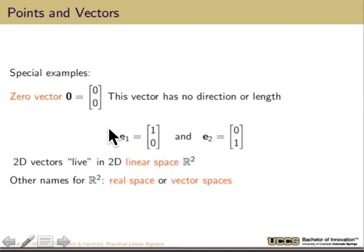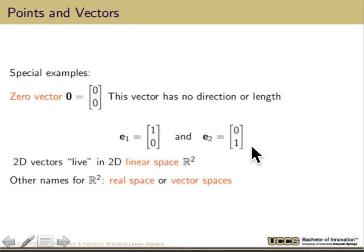There are some very special vectors. The zero vector, generally written as the bold number zero, is the column vector of two zeros. This vector is very special because it has no direction and no length. There are other important vectors: in any coordinate space we can have basis vectors. In Euclidean space, E1 is (1, 0) and E2 is (0, 1). In general, vectors live in some space — we can say they live in R2, also called the real space. We'll also talk about vector spaces, and later on very general vector spaces.